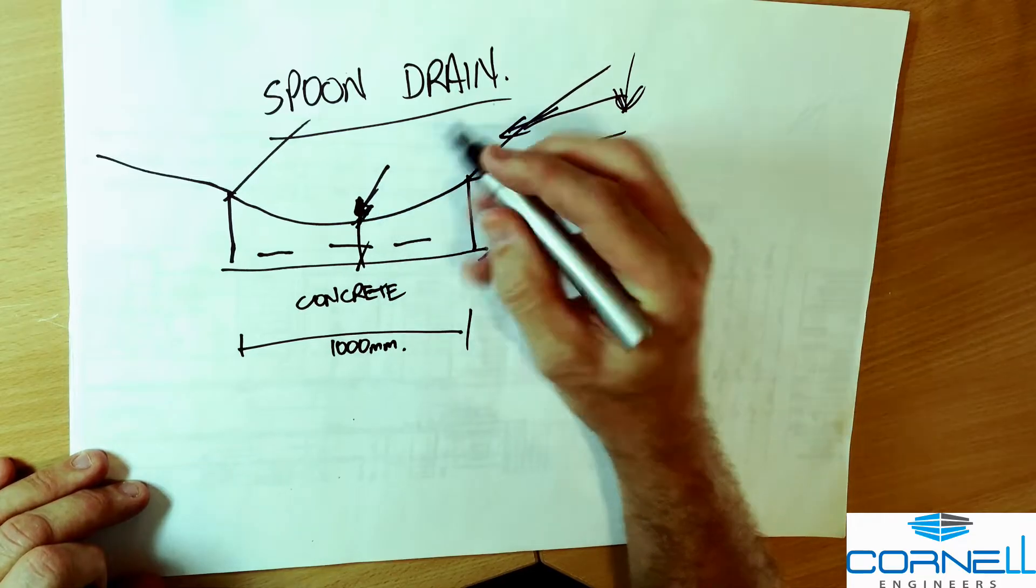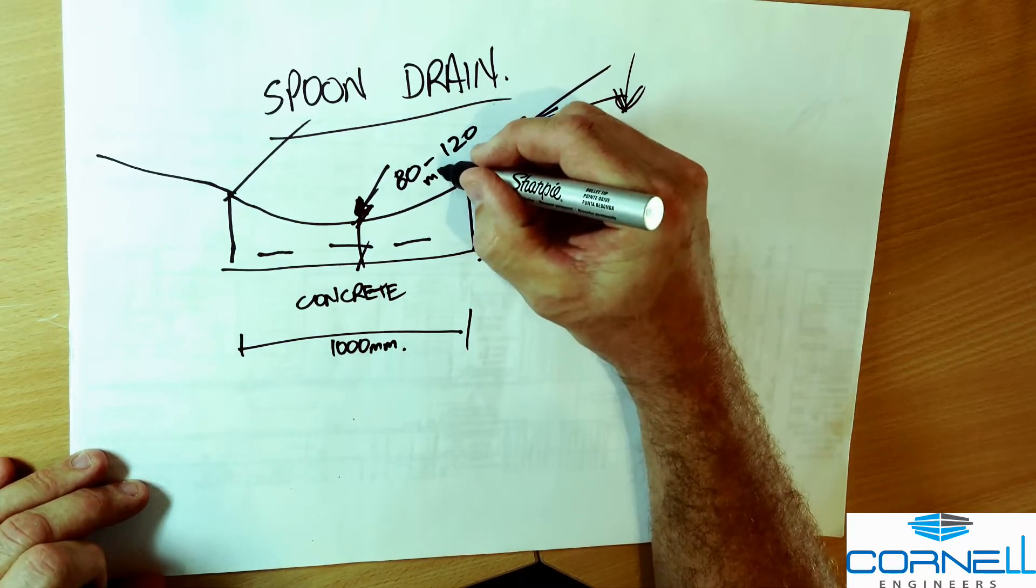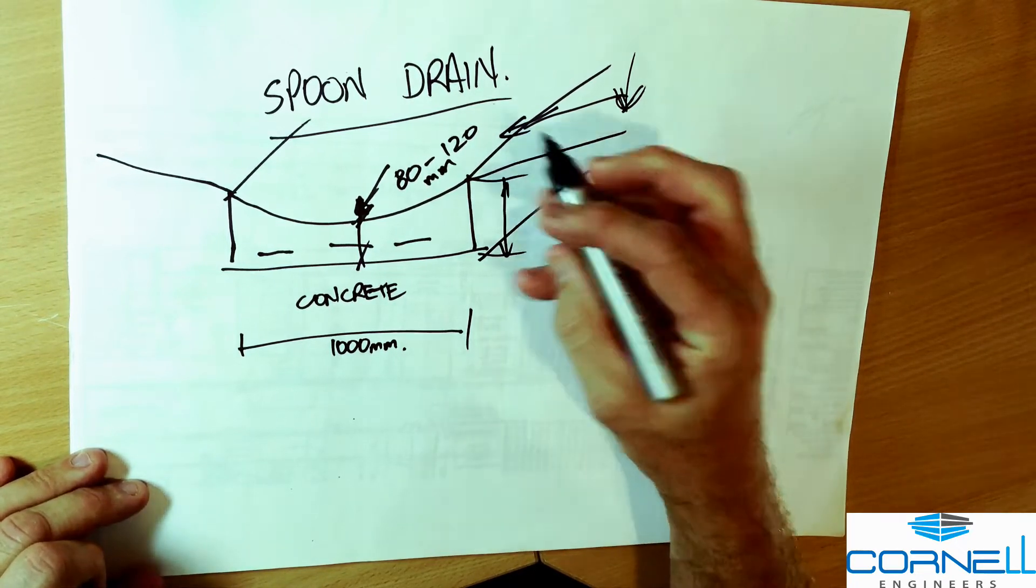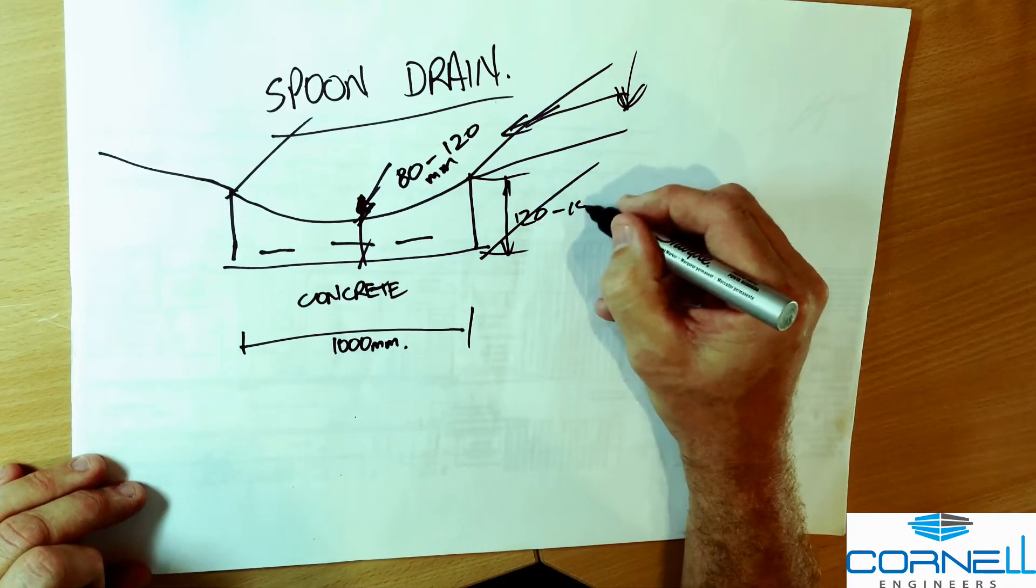The thickness of the concrete is somewhere between 80 to 120 millimeters deep, and thickness around the edge is deeper because the shape of the spoon drain is maybe 120 to 150 millimeters.